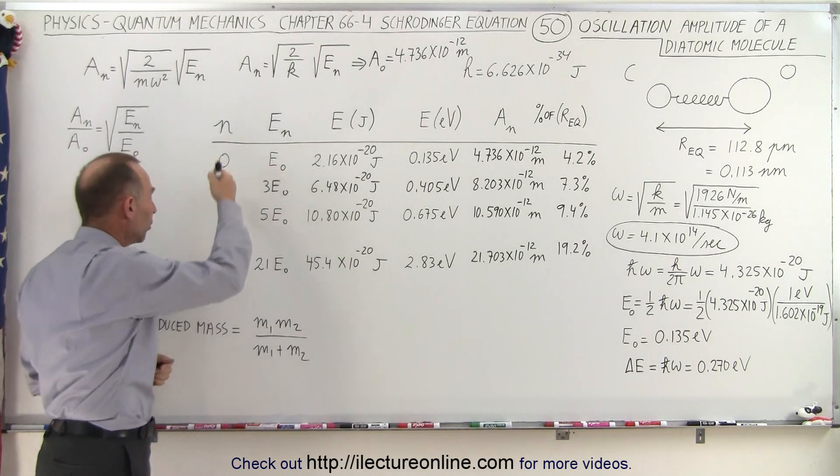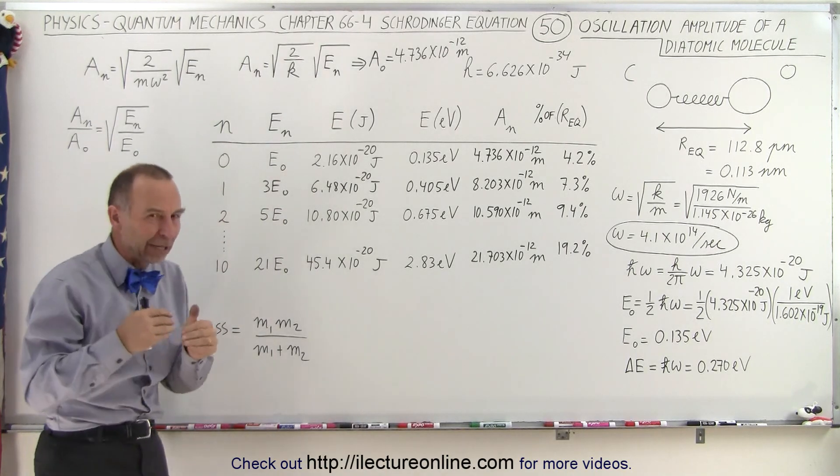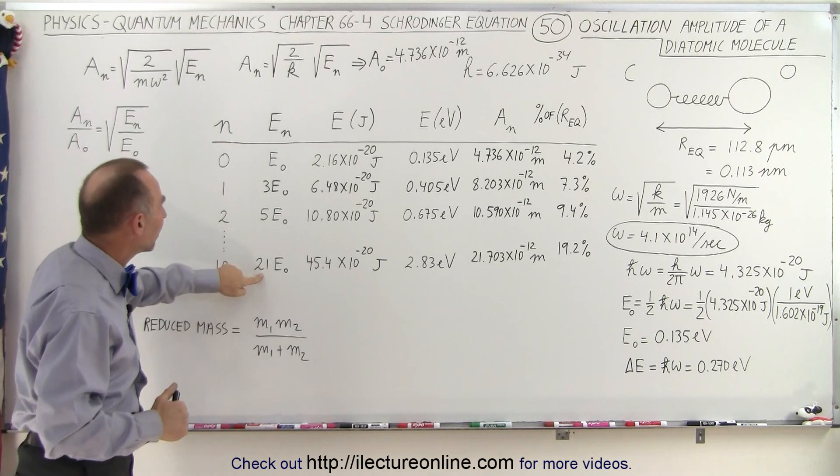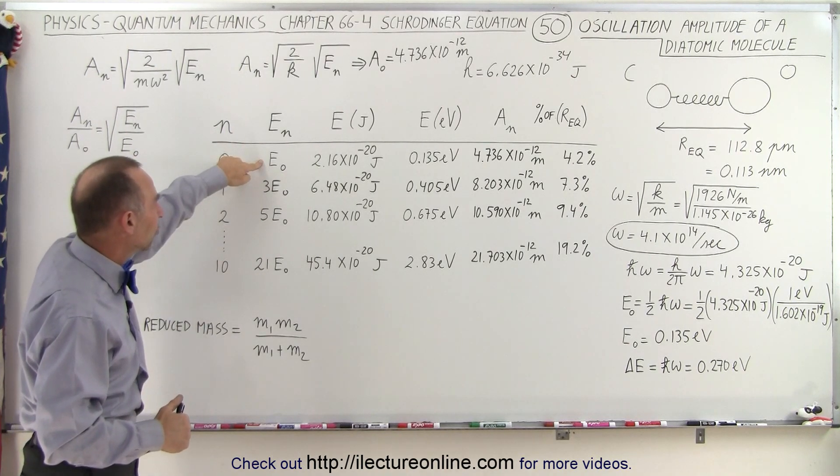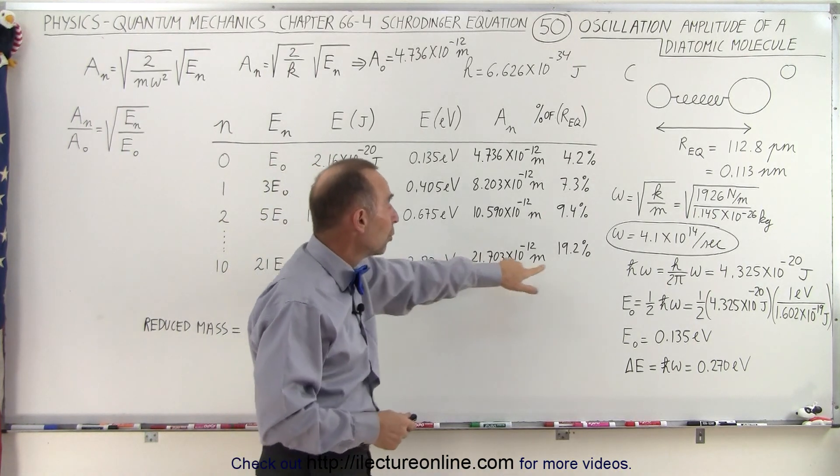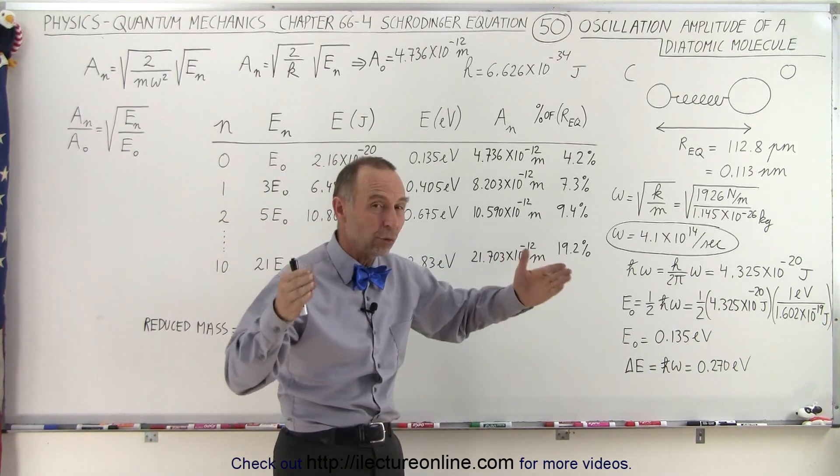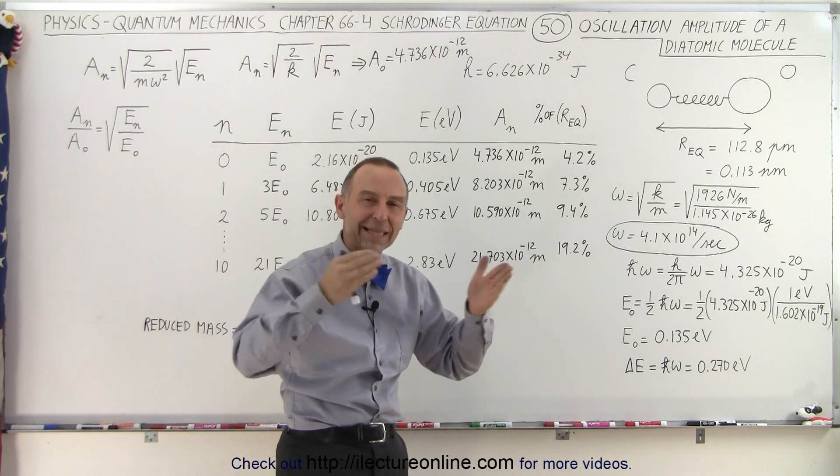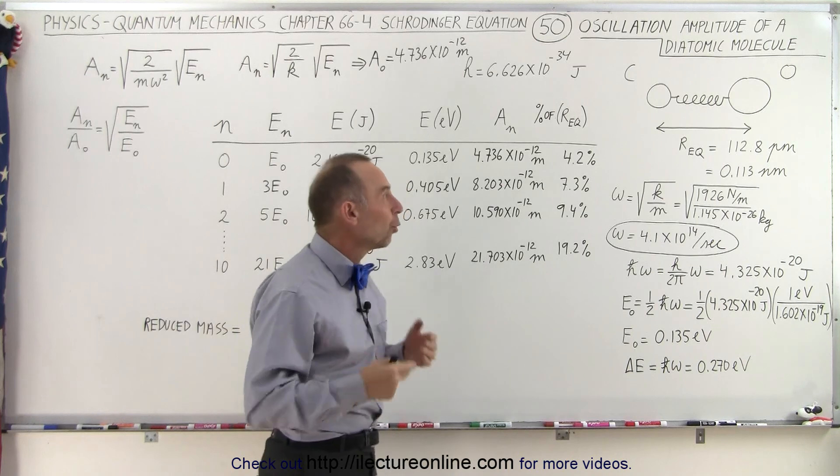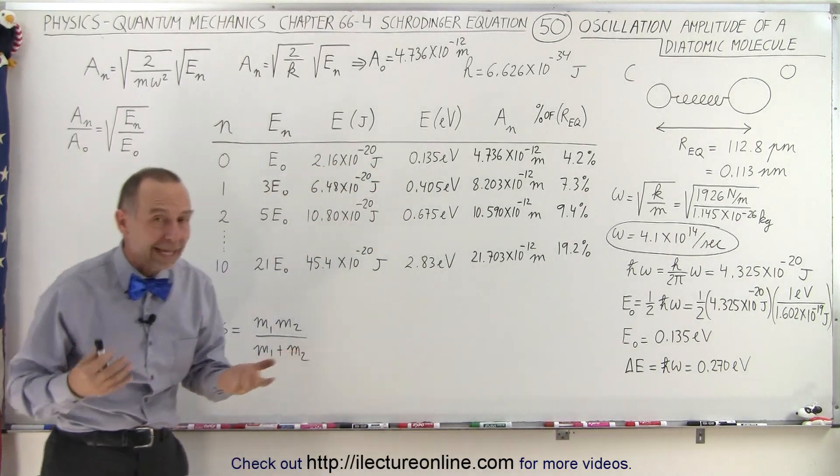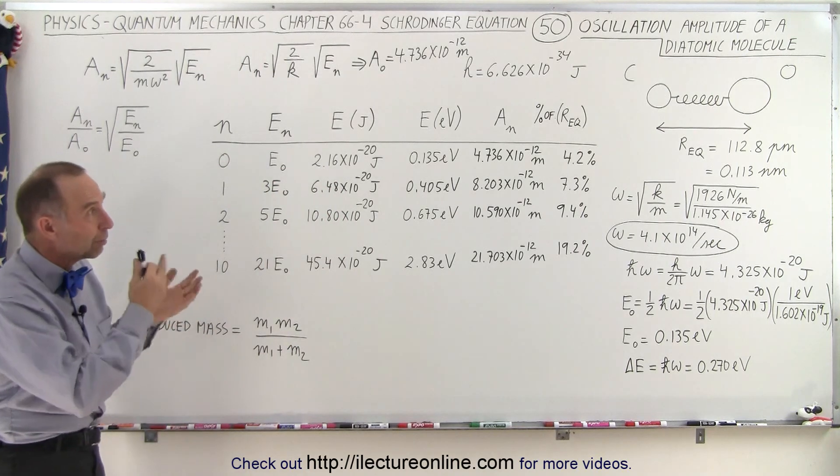And then if we jump all the way to the quantum state 10 - of course we can't do it all at once, we have to jump one state at a time - then we have 21 times the energy at the zero energy level, which means we now have an amplitude of 21.7 picometers, which is 19.2 percent of the total distance between the atoms. So it gives you kind of a physical feel of what the amplitude of the oscillation is relative to the distance between the two atoms. So again, that's a realistic scenario with a real molecule, the carbon monoxide molecule, and we have some good appreciation for that.